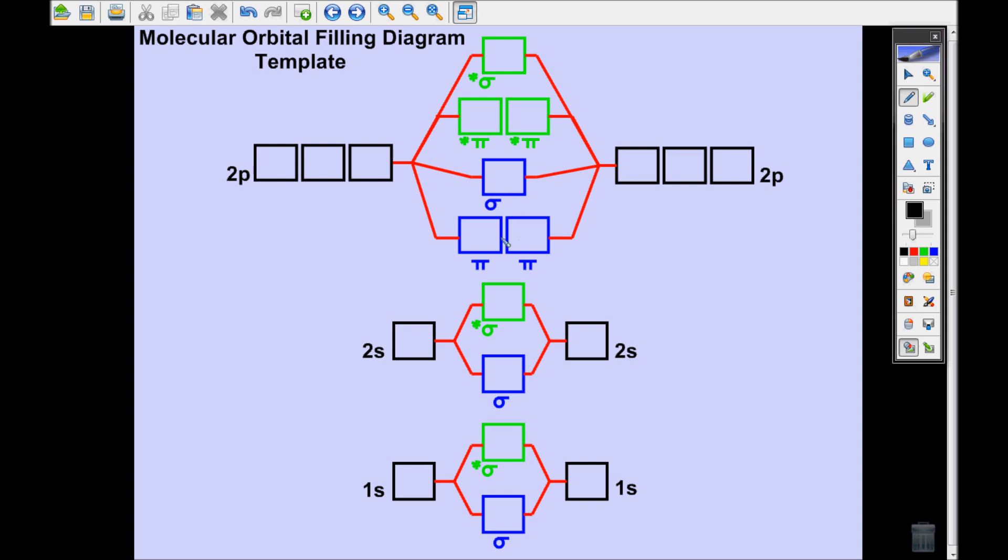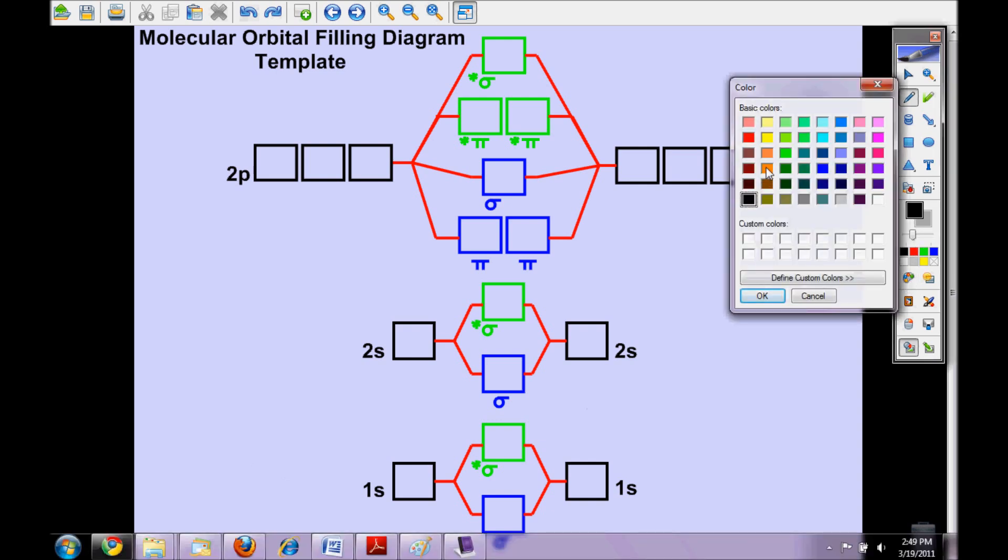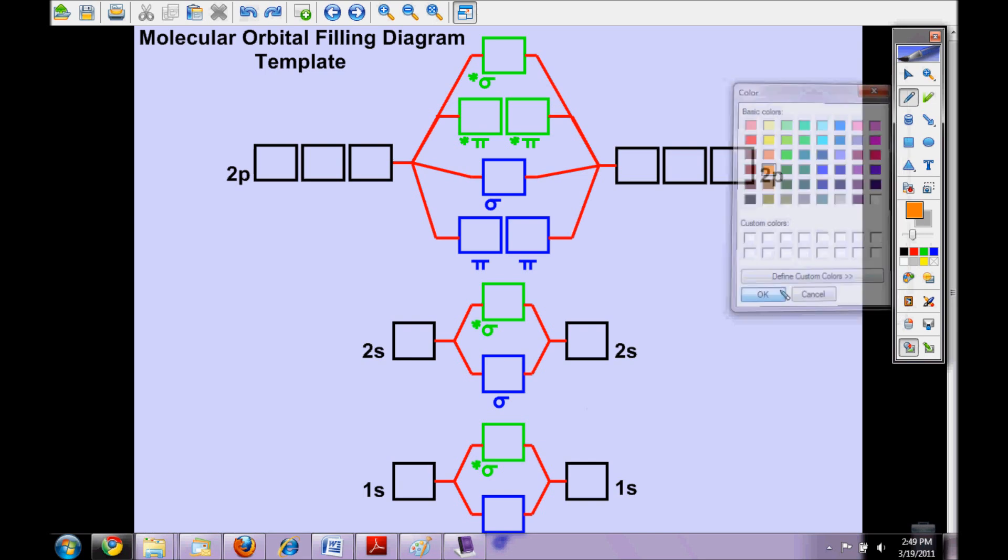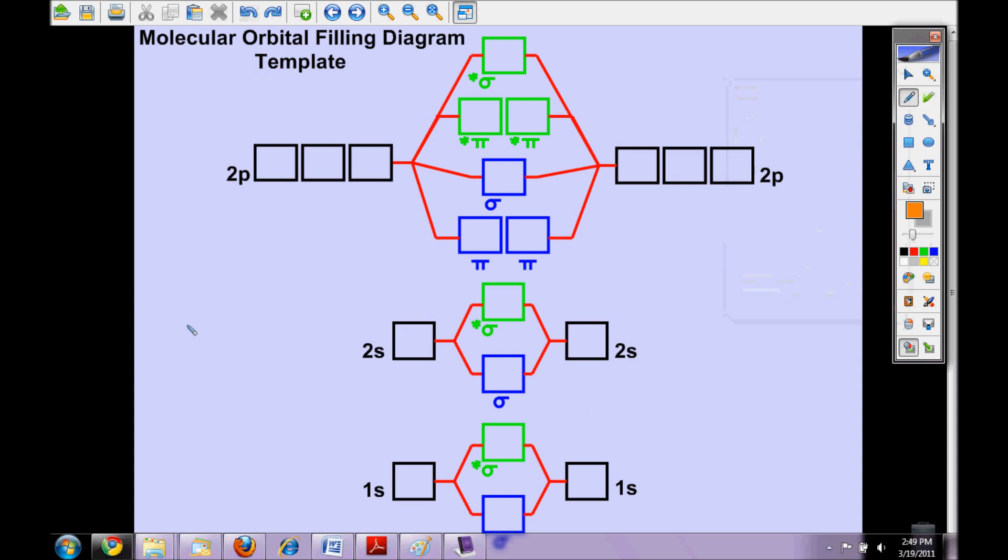All right, so let's do an example. We're going to start out with a small molecule like hydrogen. You've already seen what kind of orbitals it makes graphically, so let's start out with hydrogen and fill in this diagram. When you're filling in the diagram, remember all the rules apply—the rules of electron configuration.